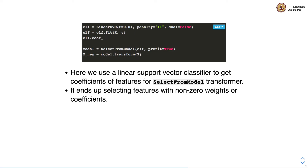This code selects features with non-zero weights or coefficients. We have used L1 regularization — this is an L1-regularized Linear Support Vector Classifier — and hence we select features with non-zero weights. We will study this regularization in subsequent weeks, and you will see that the L1 regularizer essentially assigns non-zero weights only to features that are useful; all other weights are taken to 0 by the L1 regularizer.